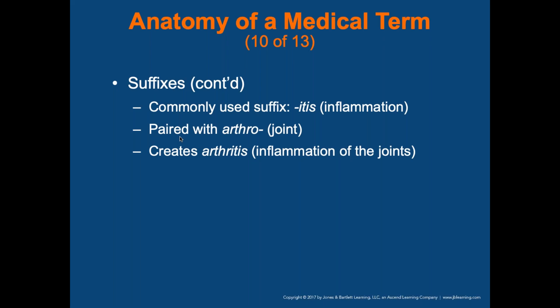Rhinitis means inflammation in the nose. Endocarditis, myocarditis, pericarditis — 'endo,' 'myo,' 'peri' are the three layers of the heart, and adding '-itis' means inflammation of that layer. 'Arthro' means joint, so arthritis means inflammation of the joints. And osteoarthritis — 'osteo' meaning bones, 'arthro' meaning joint, '-itis' meaning inflammation — inflammation of the bone joints.